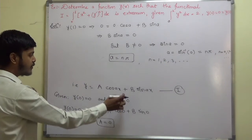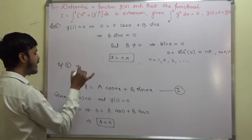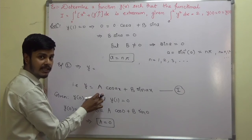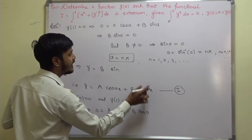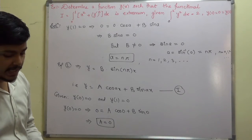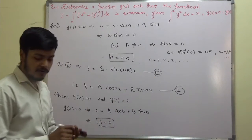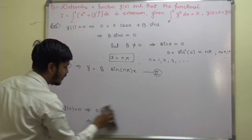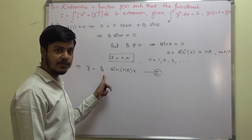Substituting these values back into equation 1, with A equals 0, equation 1 gives y equals B sin(Nπx). Call this equation 2. Now the only unknown remaining is the constant B, and we need to find it.